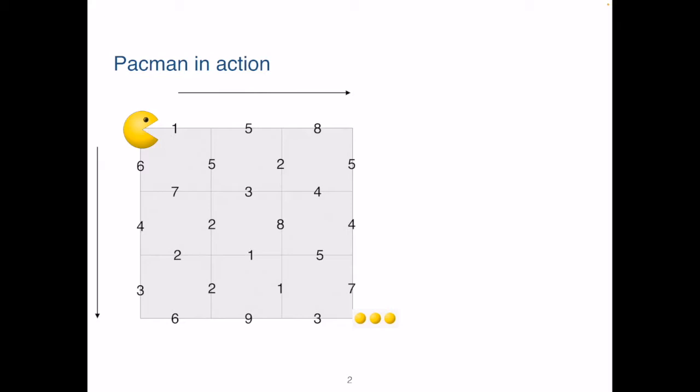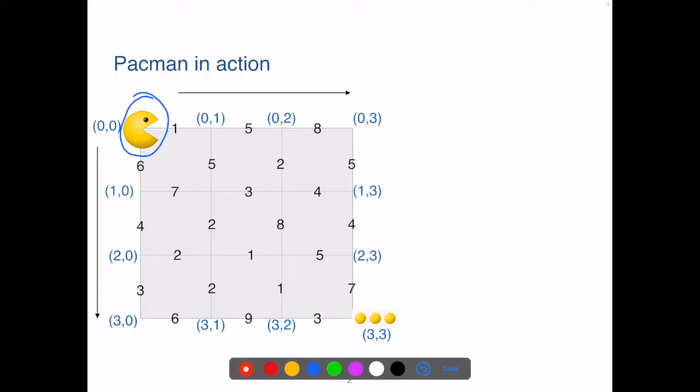Given a rectangular grid with rows and columns numbered 0, 1, 2, 3, and n, Pac-Man is located at point (0,0) in the top left corner and wants to get to location (n,n) in the lower right corner.